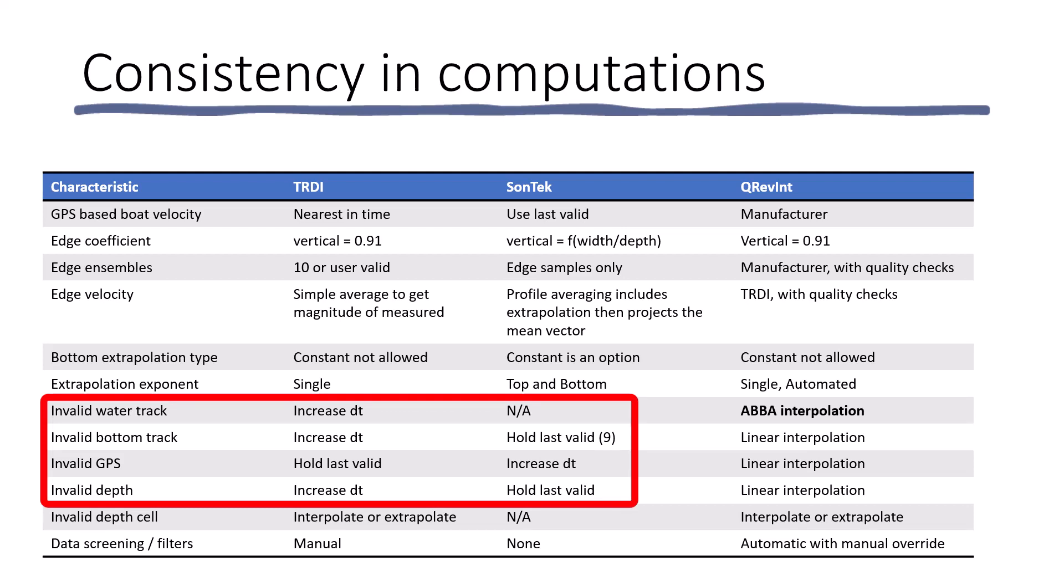Well, Sontek, at least the M9S5 at the time, used the narrow band processing for most of their data collection, and they had no screening of water track data. TRDI did screen their water track data because they were using a broadband approach. And if the water track data was invalid, they would simply increase the time between ensembles. So, they would mark the entire ensemble invalid, and then the next valid ensemble would have a longer duration and essentially backfill that data. If the bottom track was invalid, again, TRDI would mark the entire ensemble invalid, increase delta t, and backfill. However, in that same situation, Sontek would hold the last valid bottom track value for up to nine samples, and then at the end of nine samples, they would set that boat velocity to zero.